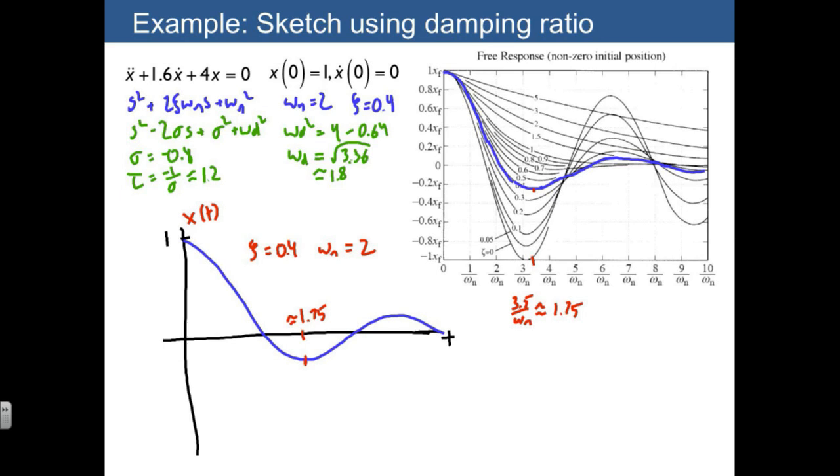From that, I can calculate the period of the sinusoid, which is just going to be 2π over ωd, which is going to be 2π over 1.8. That's roughly about 10% bigger than π, so why don't we just call that roughly 3.4?